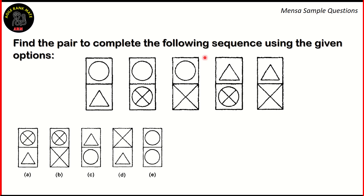Find the pair to complete the following sequence using the given options. These are the options — the smaller figure and the larger figure. It shows us the actual sequence. In the sequence we have five figures; we need to find out what figure number six would look like. If you look at the five figures, you see that each figure has two shapes.